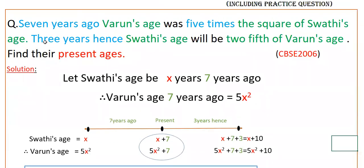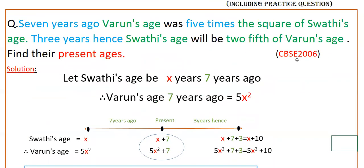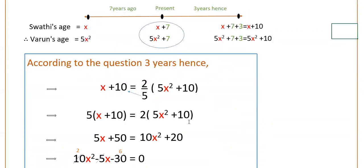There is a condition: 3 years hence, Swathi's age will be 2 fifths of Varun's age. So 3 years hence, Swathi's age is X plus 10. That is equal to 2 fifths of Varun's age after 3 years, which is 5X squared plus 10. So the equation is: X plus 10 equals 2 fifths of (5X squared plus 10).